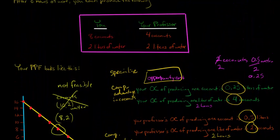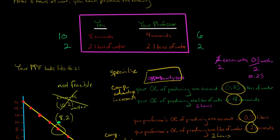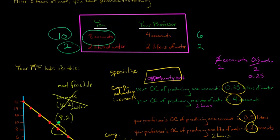So now you're at (10, 2) and your professor is at (6, 2). Remember, it had seemed like (10, 2) wasn't even possible — we established that (8, 2) is on the PPF and is efficient in production. But by specializing and trading, you're actually able to consume at a point that was beyond the PPF. You have ten coconuts instead of eight, the same two liters of water, and your professor now gets six coconuts and two liters of water instead of four coconuts and two liters. You're each better off by specializing and trading, consuming at a point beyond your individual production possibilities frontier.